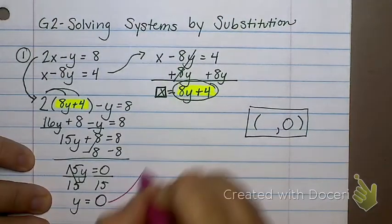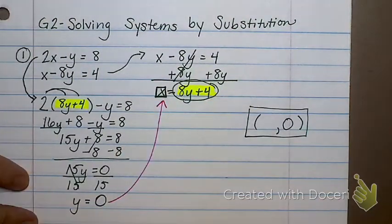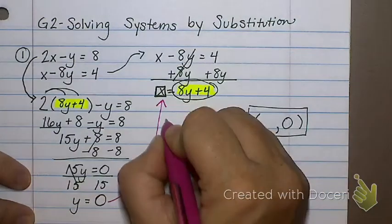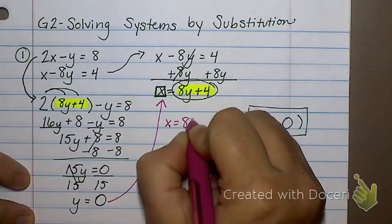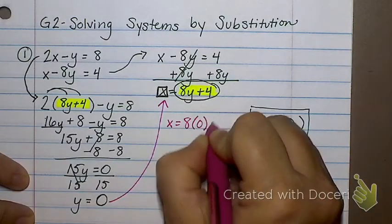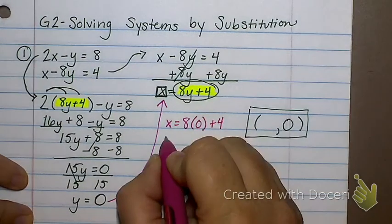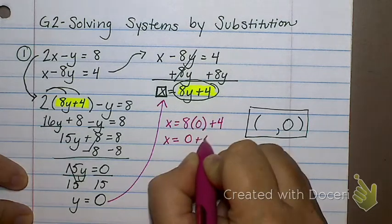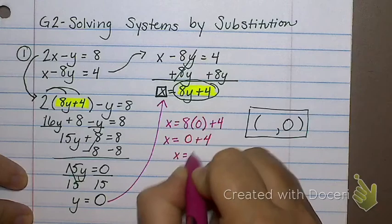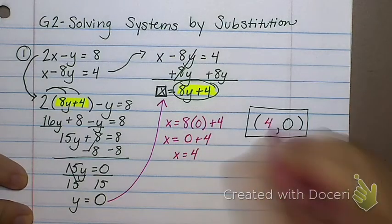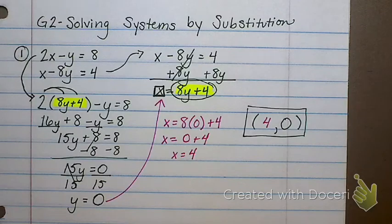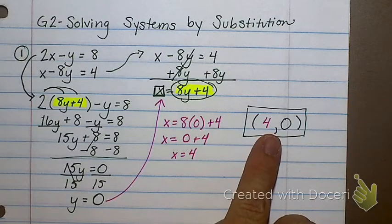I take this and I go back up here to where I had one by itself, and I'm going to plug in 0 for y. So x equals 8 times 0 plus 4. What is 8 times 0? 0 plus 4. So my answer is the point 4, 0. Meaning if I took those and I graphed them, they would intersect at the point 4, 0.